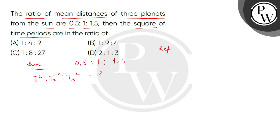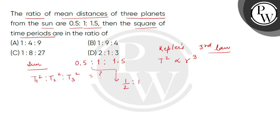We will apply Kepler's third law of planetary motion. According to this, T² is directly proportional to R³. Now we convert the distances into fractions: R1 = 1/2, R2 = 1, and R3 = 3/2. Now we take the cube of each.